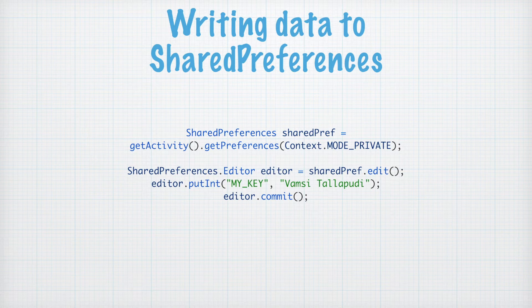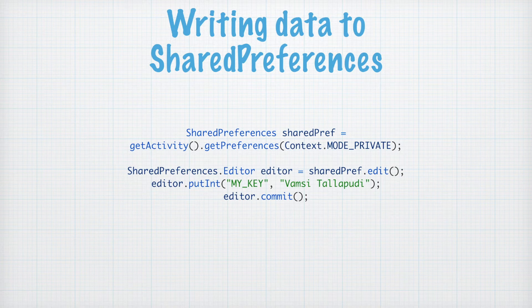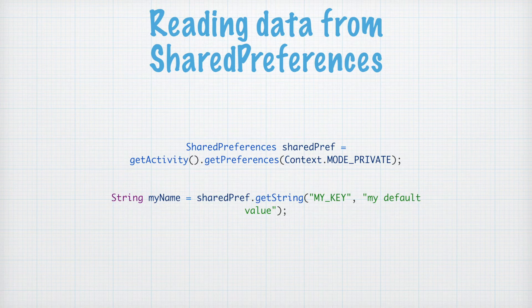With this handle of Editor, we can call the putInt() method which accepts two parameters: one is a key and the other is a value. For example, I used my_key to store the value "Vamsi Thalapudi" into shared preferences using the editor.